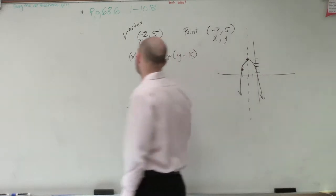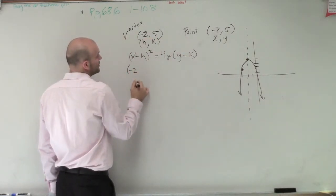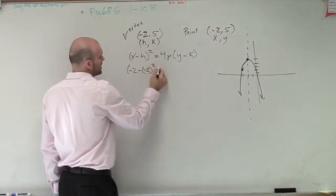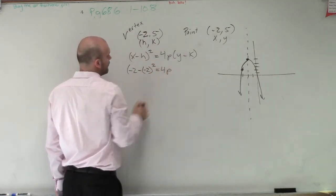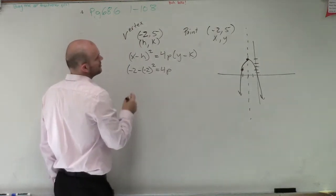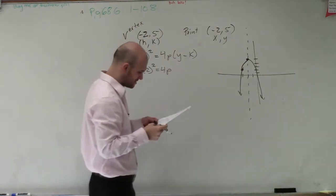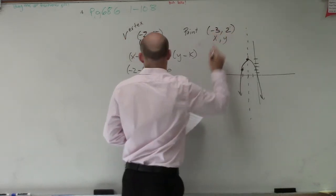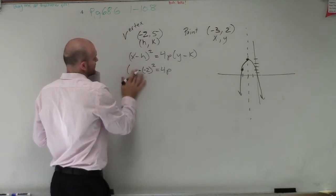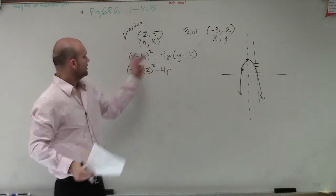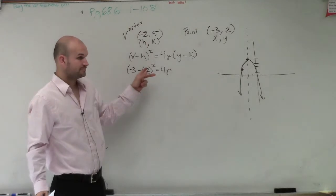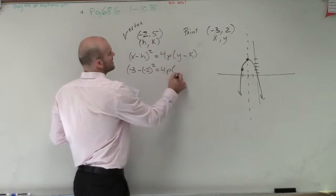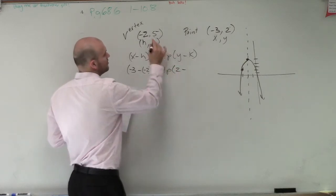So let's plug in the information that we're given. We know x is negative 3 minus h, which is negative 2, squared, equals 4p times our y, which is 2, minus k, which is 5.